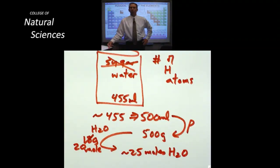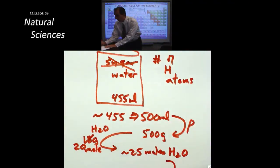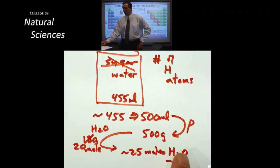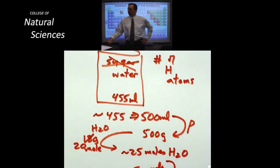Alright I have got 25 moles of water. You know that 25 moles of water will turn out because there is two hydrogens for every one mole of water to be about 50 moles of hydrogen. So I know that that container has about 50 moles of hydrogen.